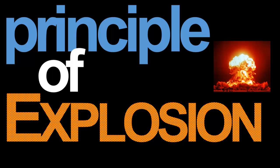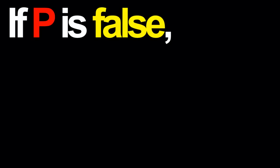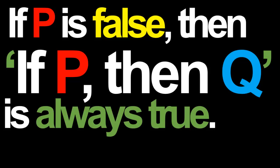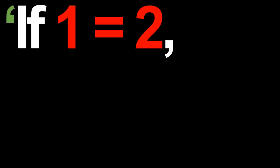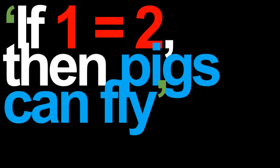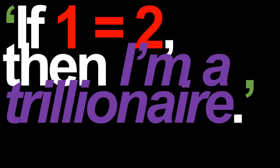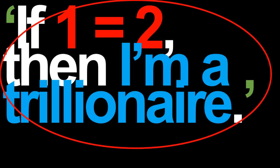What we've seen here are applications of the so-called principle of explosion. The principle of explosion says: if P is any false statement, then the statement 'if P, then Q' is always going to be true regardless of what Q is. For example, consider: if 1 equals 2, then pigs can fly. According to the principle of explosion, this is a true statement. Similarly, the statement 'if 1 equals 2, then I'm a trillionaire' is also true. We need to be very careful — the principle of explosion is not saying that I am indeed a trillionaire. Instead, it is saying that the entire conditional statement 'if 1 equals 2, then I'm a trillionaire' is true. This is an important but subtle distinction.